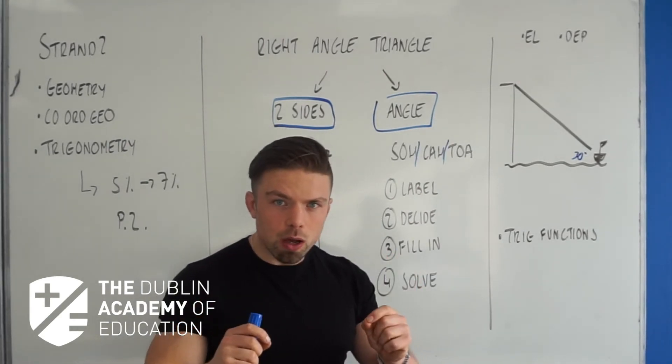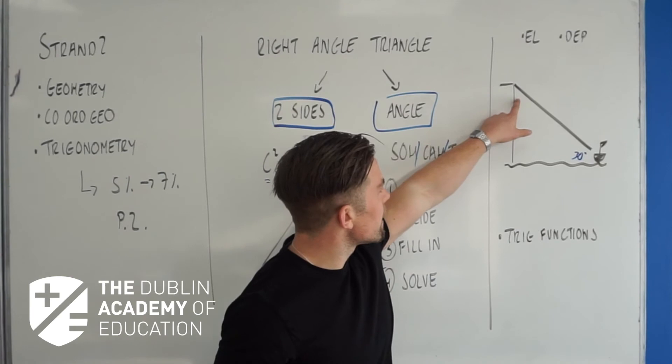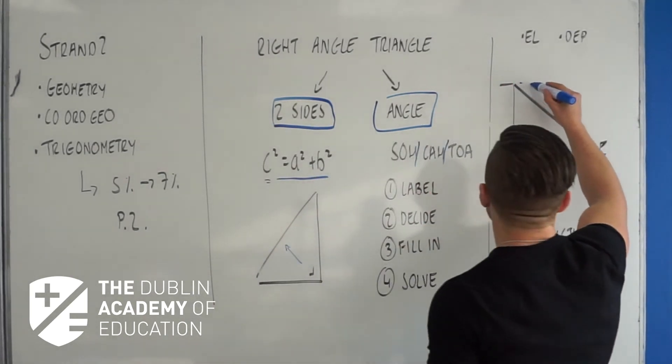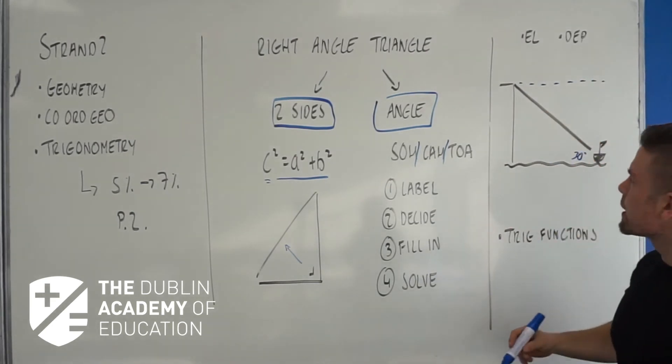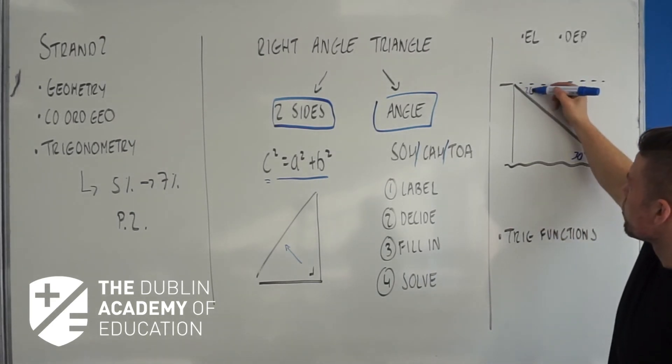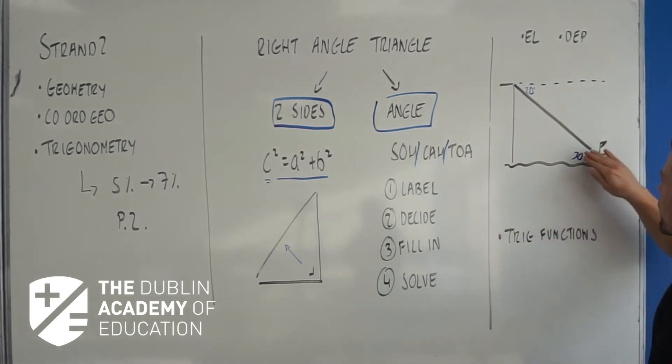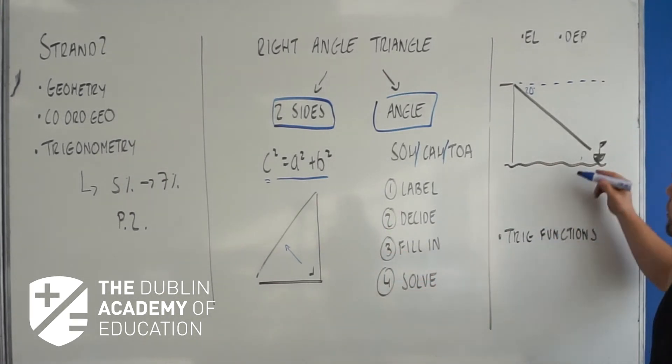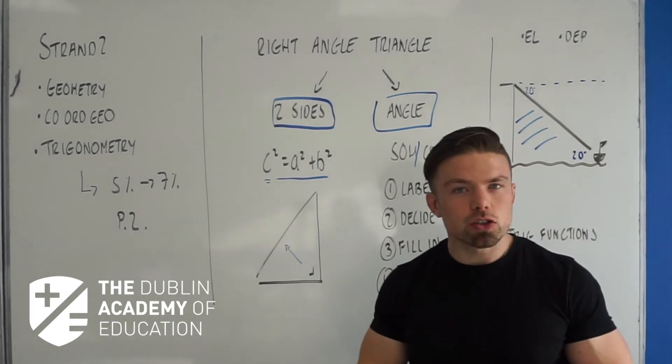The angle of depression many students mistake it being here because we're talking about being at the top of the cliff, but mathematically that angle, let's just pretend in this case was 20 degrees, is actually here. So what I always tell my students is just treat it as if it's elevation and put it in the same spot and you can deal with this triangle and move on and it's completely fine.